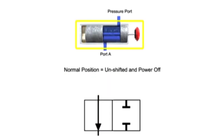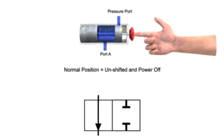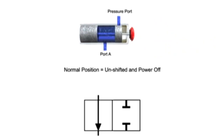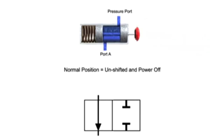Valves that do not have mechanical or electrical actuators do not have a normal position because they must be manually moved. When shifted, they remain in that state until manually shifted to another position. The terms normally open and normally closed are used to describe the condition of a valve when it is in the normal position. For this valve, the normal position is position 1, which allows unrestricted fluid flow through the open ports. Therefore, this valve is a normally open valve.